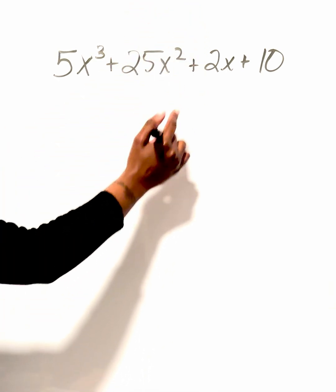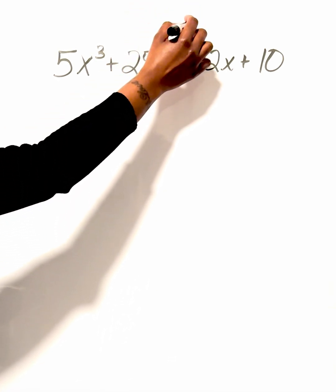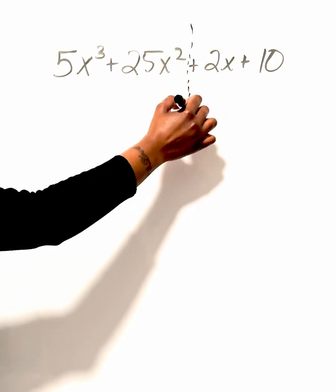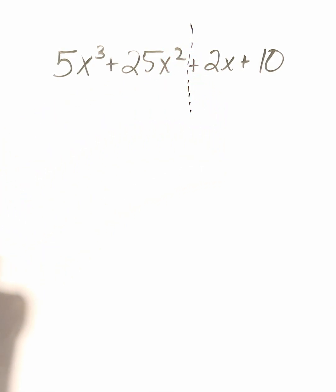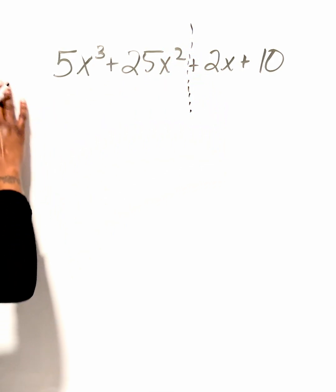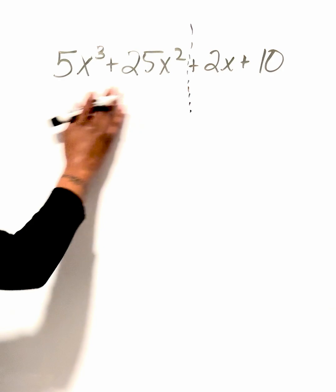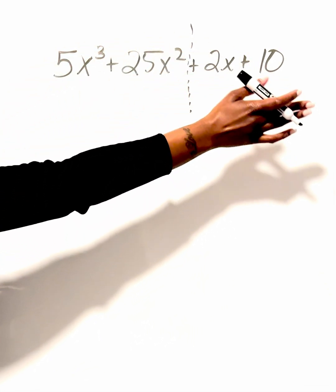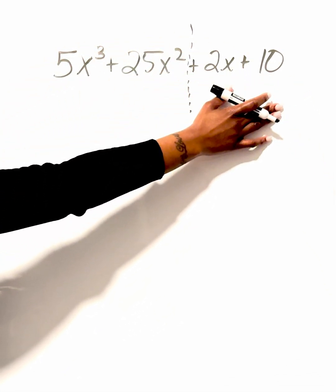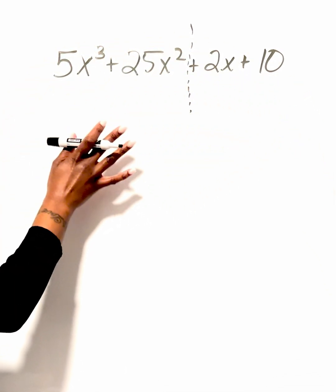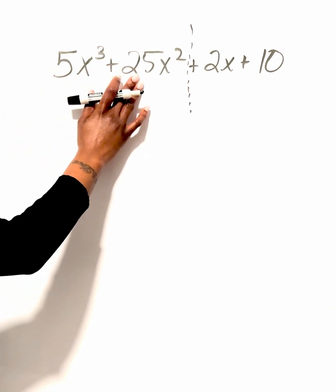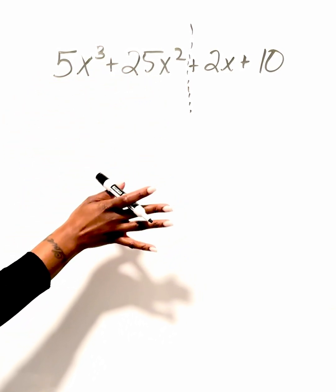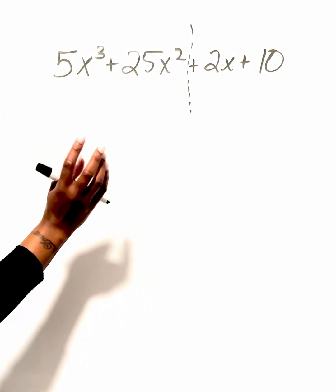The very first thing you're going to do is divide your expression in half. Then we're going to factor out the GCF — the greatest common factor — on the left side, and then repeat the same process for the right side. I always like to say: do numbers first and letters second.